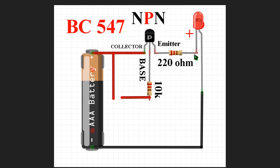The opposite side of the resistor is connected through the positive terminal of the LED. When the base is connected through a positive voltage, current will flow from collector to emitter and the LED will glow. On the other hand, if the base is open or connected to ground, the LED will not glow.